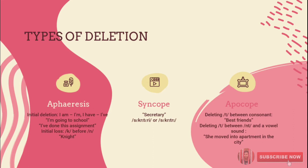The third type is apocope. Apocope is the loss of a final element, such as T before a word beginning with another consonant. Apocope can be divided into two types: first, deleting the T sound between consonants, and second, deleting T between a consonant and a vowel sound.